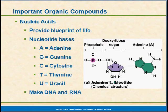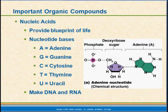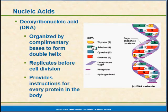As you can see here, the structure of a nucleotide — which is the monomer of a nucleic acid — consists of a phosphate, a sugar, and then one of our nucleotide bases.